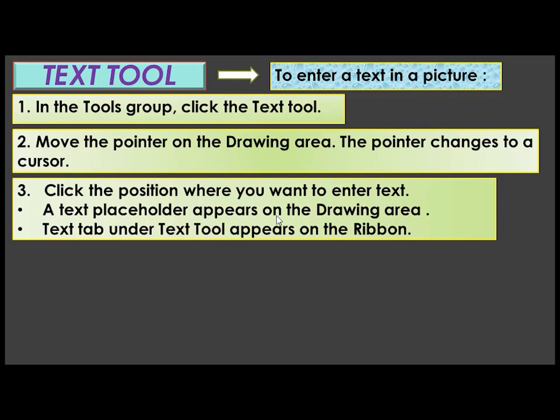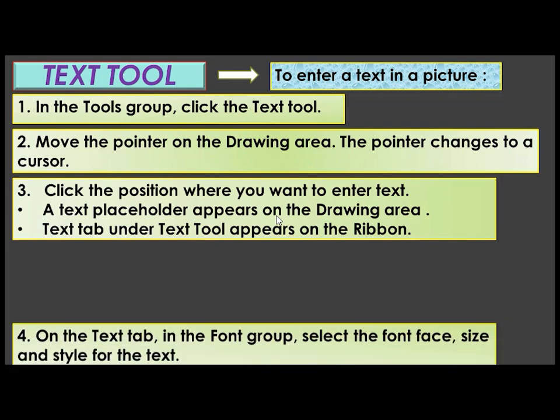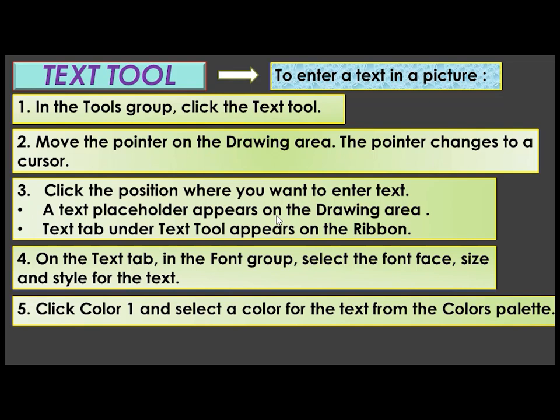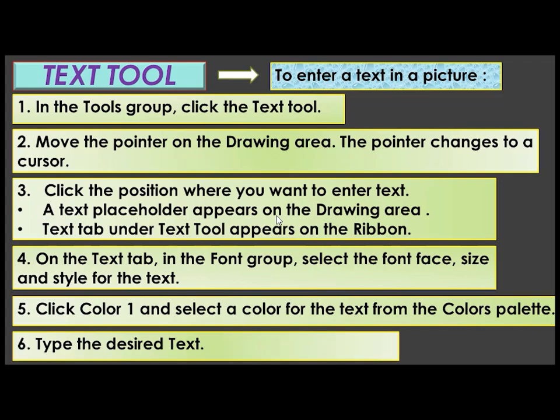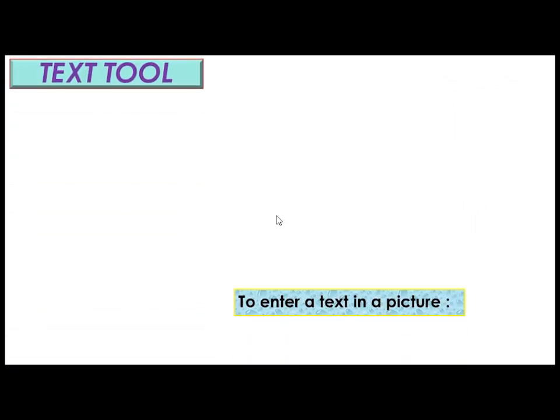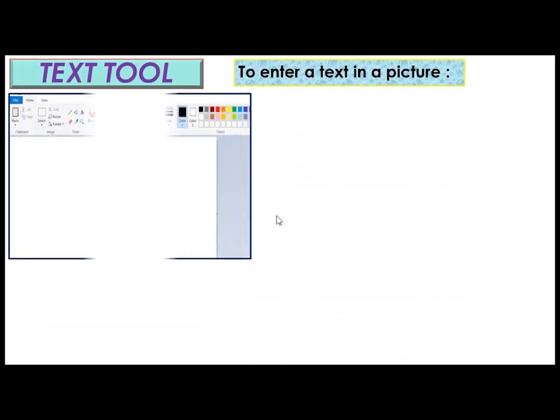A text placeholder appears on the drawing area. The text tab under text tool appears on the ribbon. On the text tab, in the font group, select the font face, size and style for the text. Click color 1 and select a color for the text from the colors palette. Type the desired text.